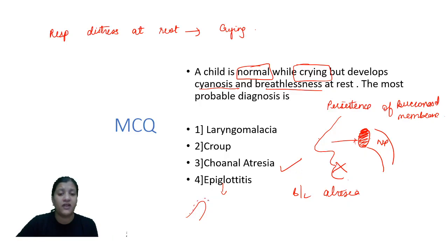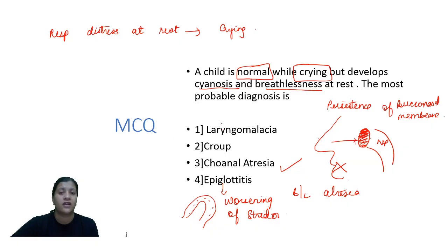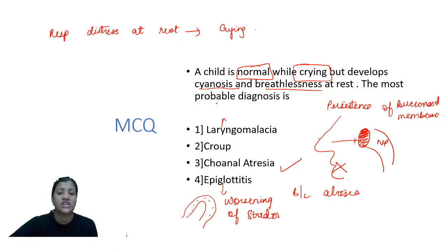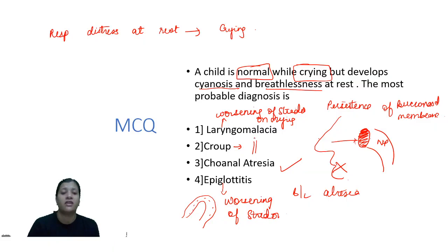In epiglottitis, when the child cries, the epiglottis is also sucked in, further worsening stridor. In laryngomalacia, the epiglottis is loose and lax without tone — when the child cries there is negative intrathoracic pressure and the epiglottis gets sucked in, obstructing the laryngeal inlet and worsening stridor on crying. In croup, the airways — larynx, trachea, bronchus — are all inflamed due to viral infection. If the child cries, there is further narrowing of the airway, resulting in worsening of stridor.